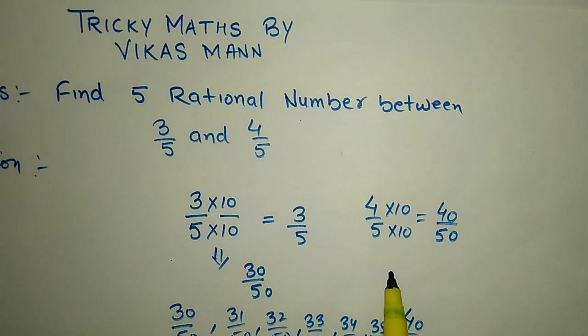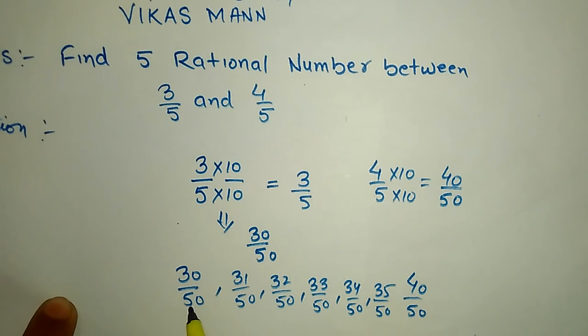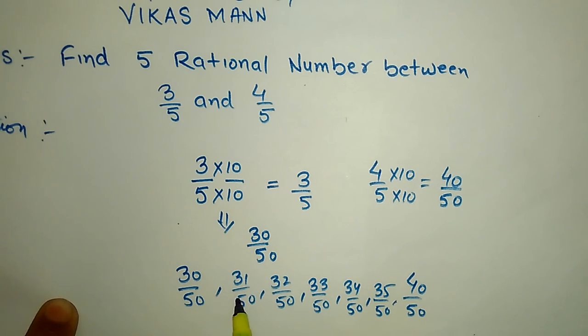Then in the next procedure, we write 30 by 50 and 40 by 50, because we know that 30 by 50 is equal to 3 by 5 and 40 by 50 is equal to 4 by 5. 30 by 50, next number 31 by 50, next number 32 by 50, next number 33 by 50, till then 39 and 40 by 50. We can find 9 rational numbers between 30 and 40. We can say 3 by 5 and 4 by 5.